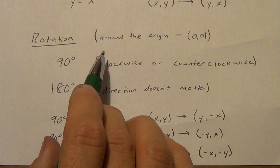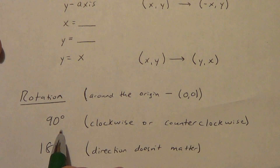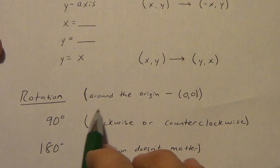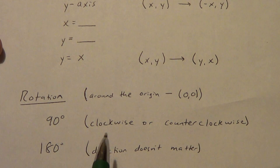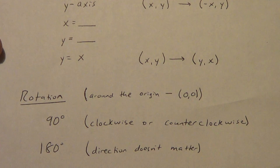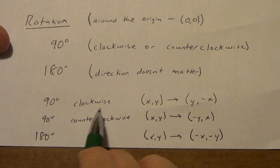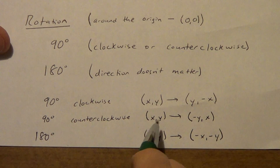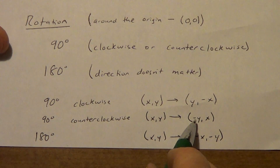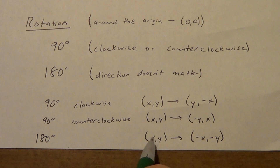Lastly, a rotation. We're going to focus on doing them around the origin, (0, 0). We can do 90 degrees or 180 degrees. For 90 degrees, we'll also give you a direction — clockwise, which is the way a clock moves, or counterclockwise. For 180 degrees, the direction doesn't matter, because spinning 180 either way ends up at the same place. For 90 degrees clockwise, you switch the x and y values and make the new y negative. Counterclockwise also switches them but makes the new x negative. For 180, they don't switch but both change signs.